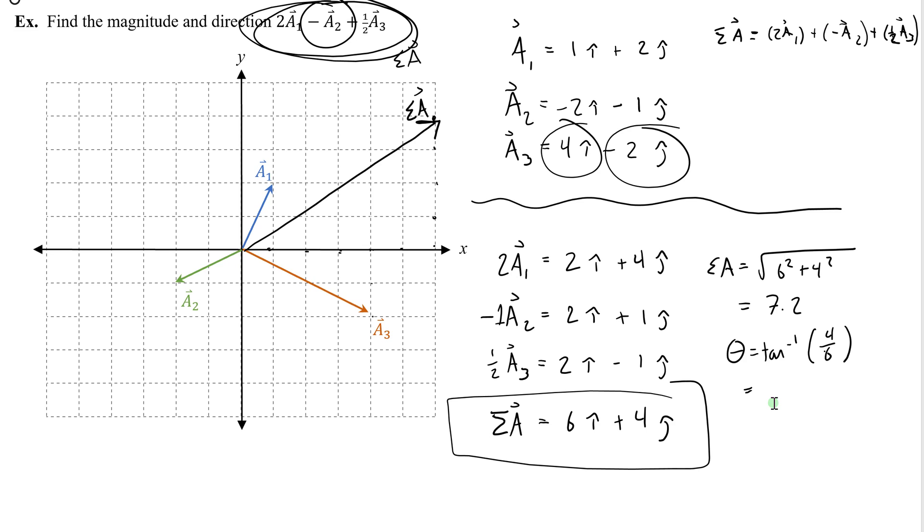And then the angle theta is tangent inverse of the y4 over the x6. Tangent inverse of 4 over 6 is going to be 33.69, so we'll say 33.7. And I check to make sure that my angle is in the first quadrant, which it is. Therefore, it is a correct angle. And here I have now found the magnitude and direction of the sum that I was asked to find.